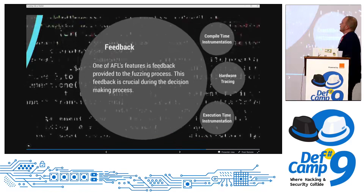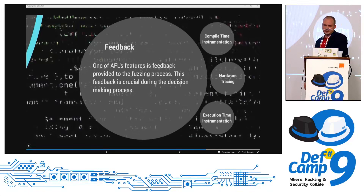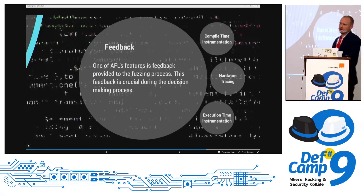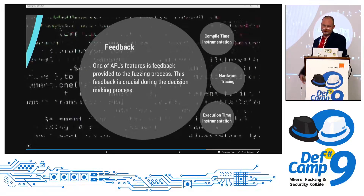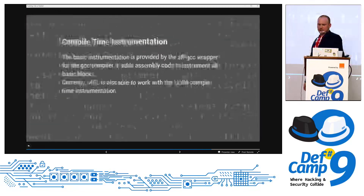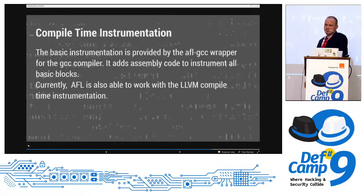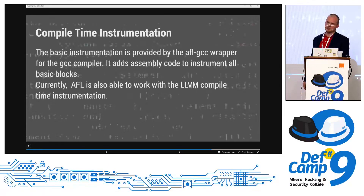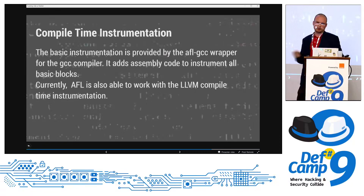Another very important thing is feedback. Feedback is information going back from the application to AFL about how the application handled the test case. Normally it's just information about what kind of coverage we have, what basic blocks were executed, what kind of path we went through. So for every new test case, we can say these test cases go through the same path we've already seen — it's pointless to test it.